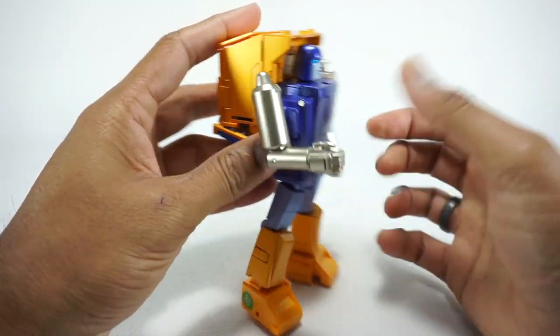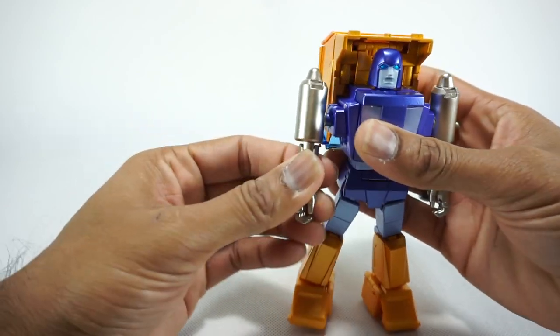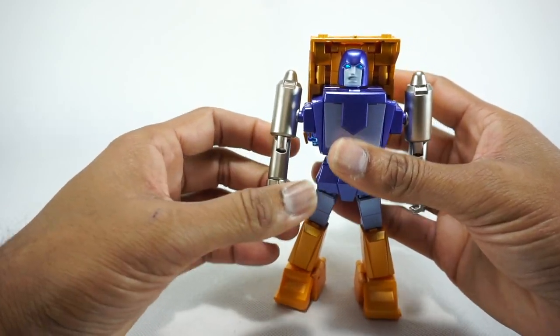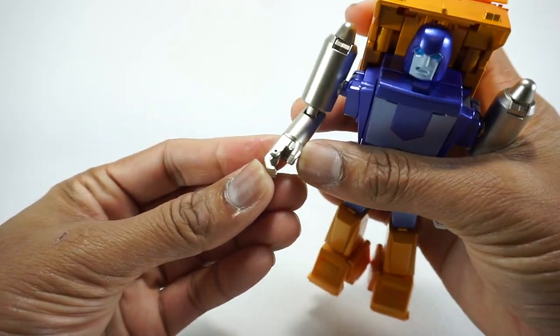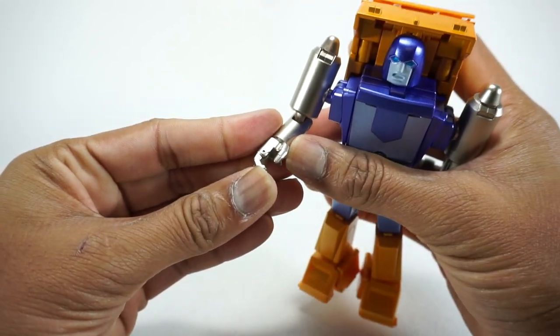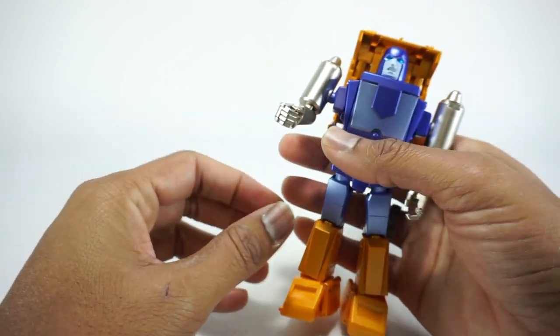Elbow rotates to 90 degrees. Rotation at the elbow. The wrist rotates here. And then the hands are on a single pin like all of their other minibots. All the fingers are on one pin.